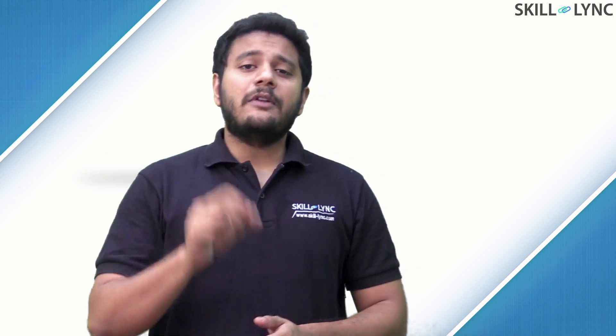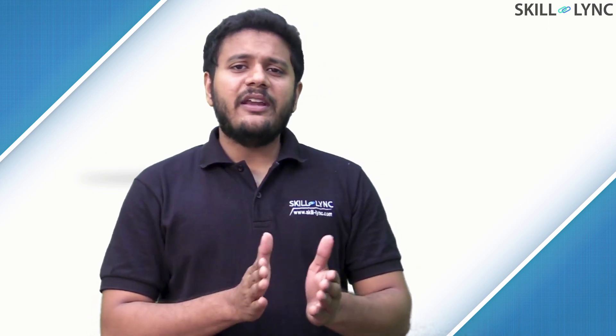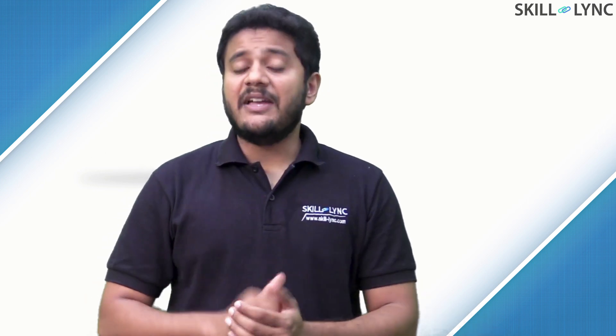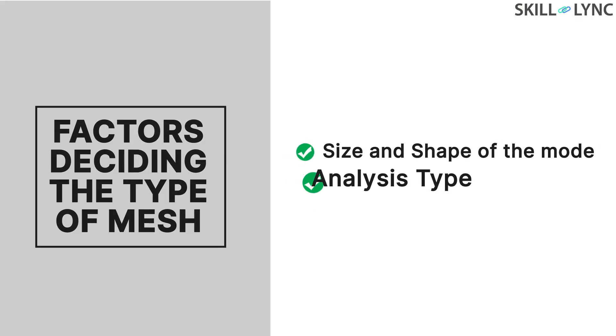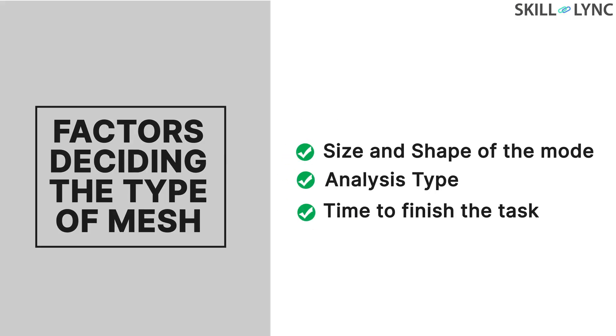In this video, we will try to understand why we need these many types of elements and their practical significance. To decide the element type, pay attention to three quantities: the size and shape of the model, the type of analysis you plan on doing, and finally, the time that has been allocated for the project.